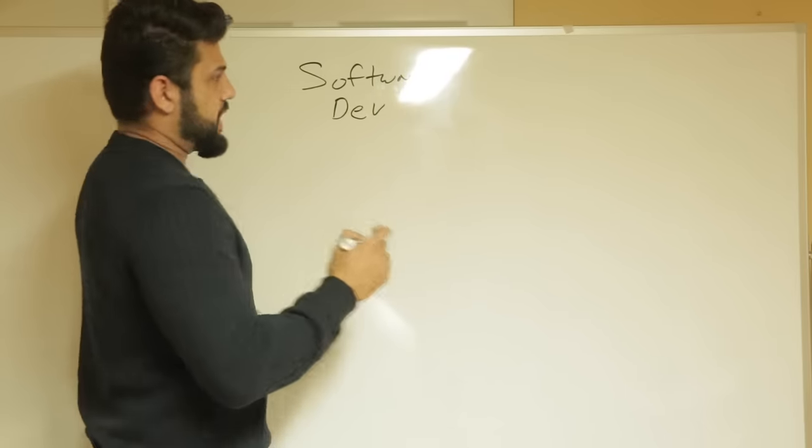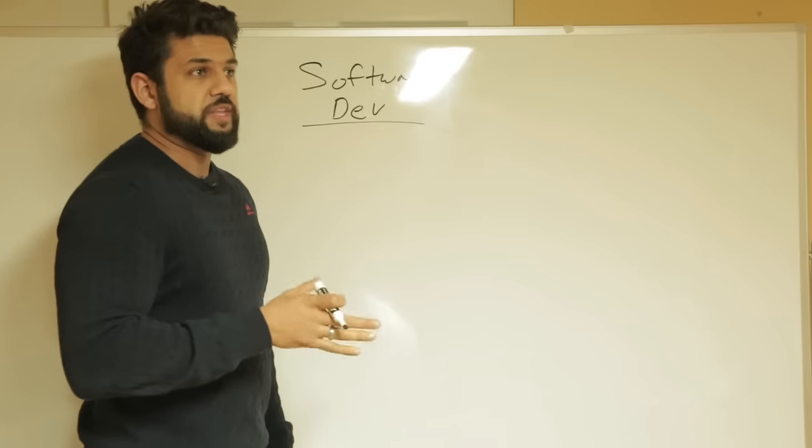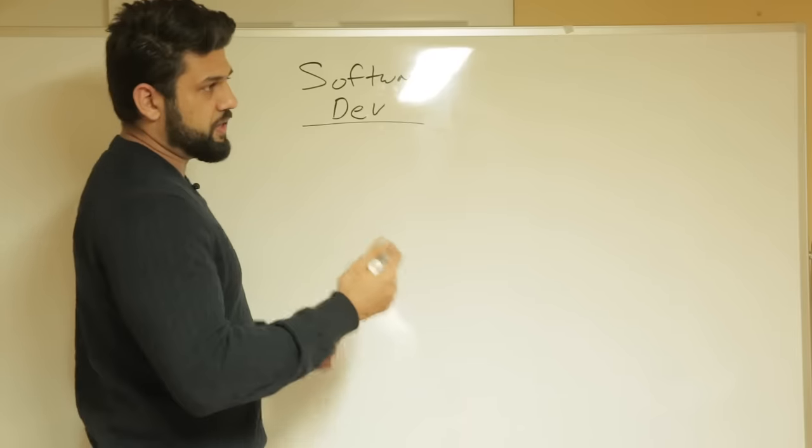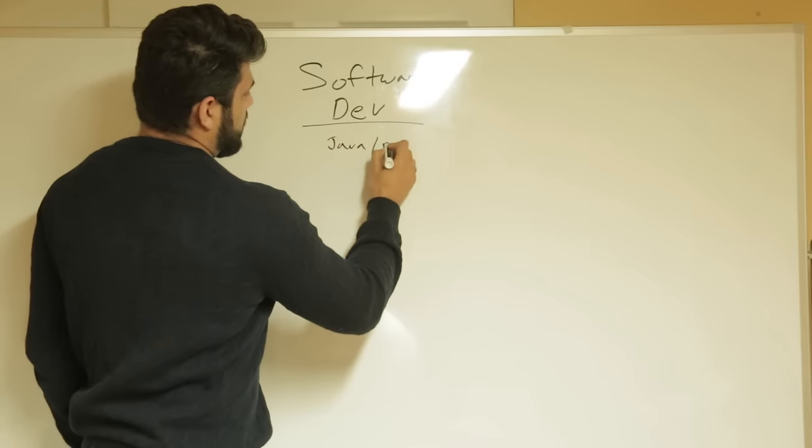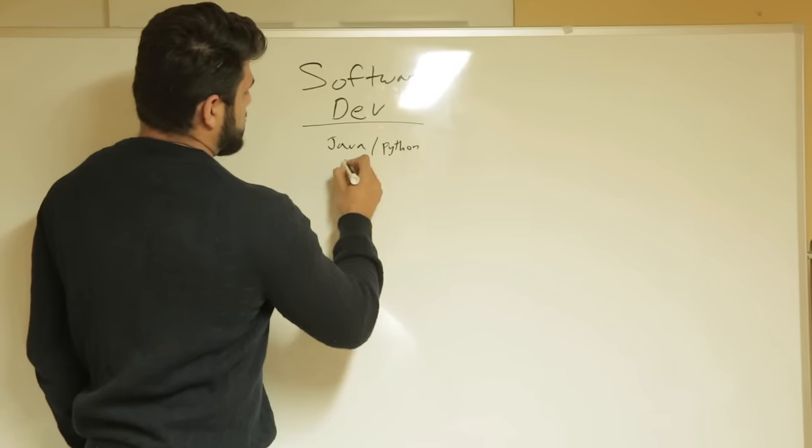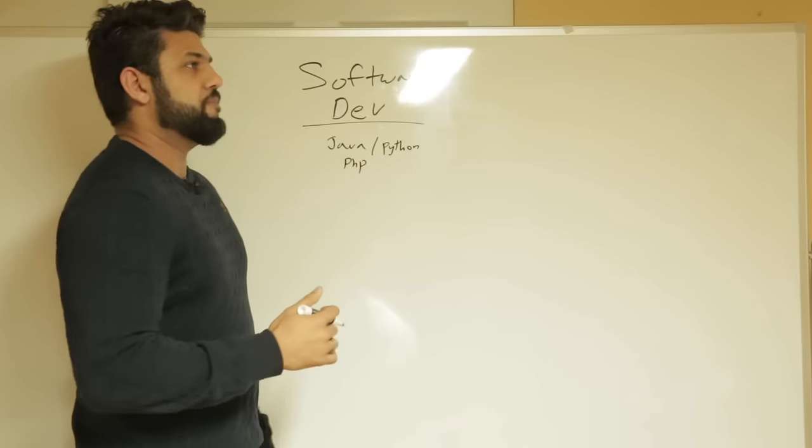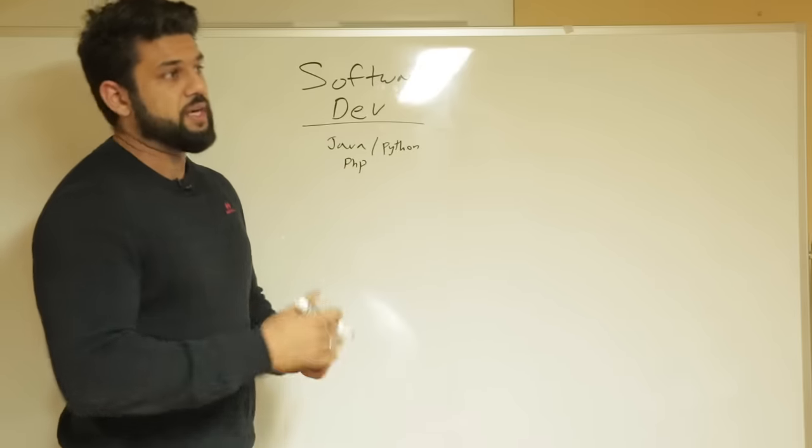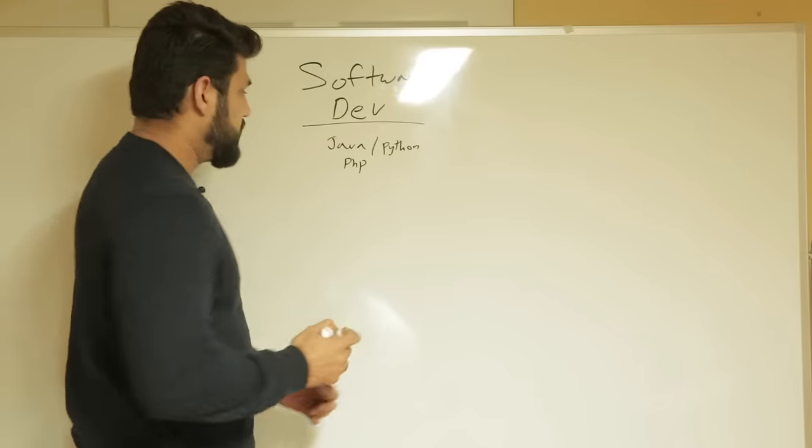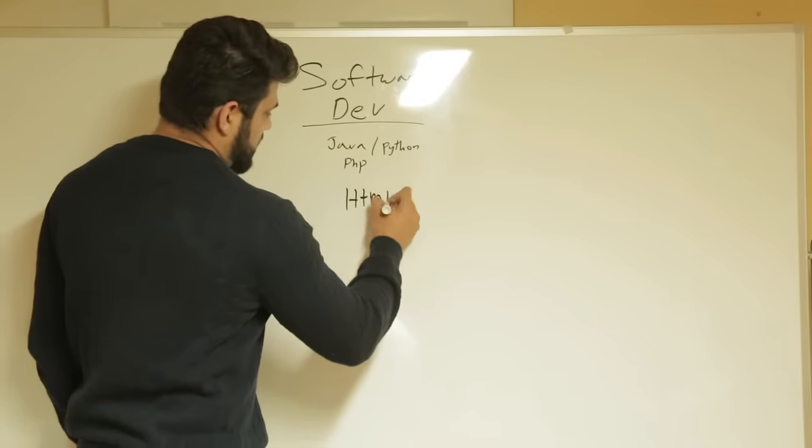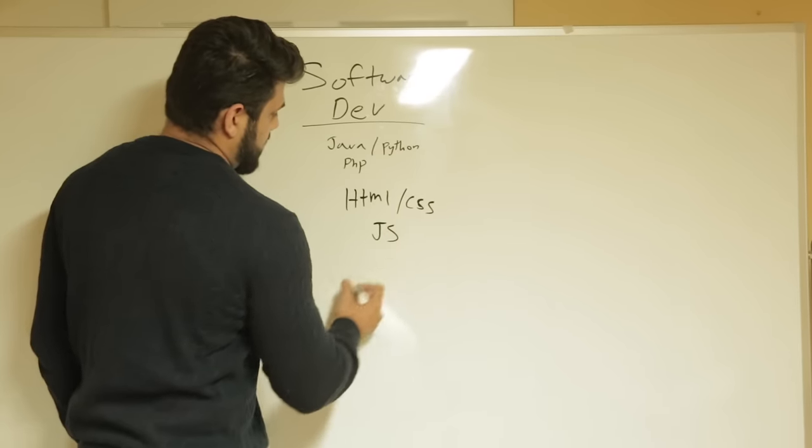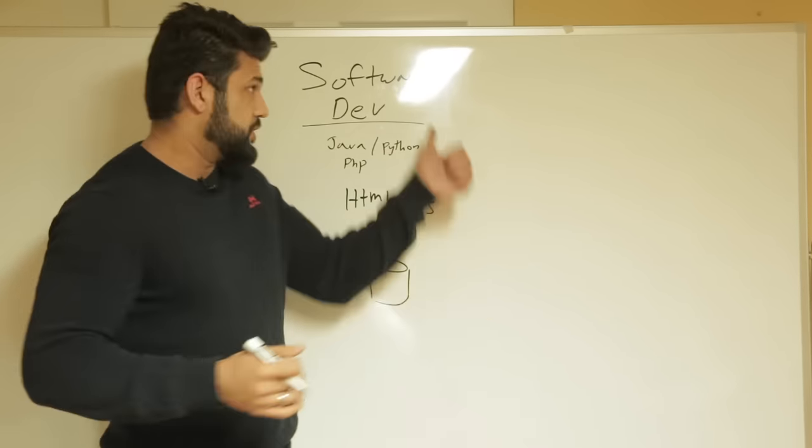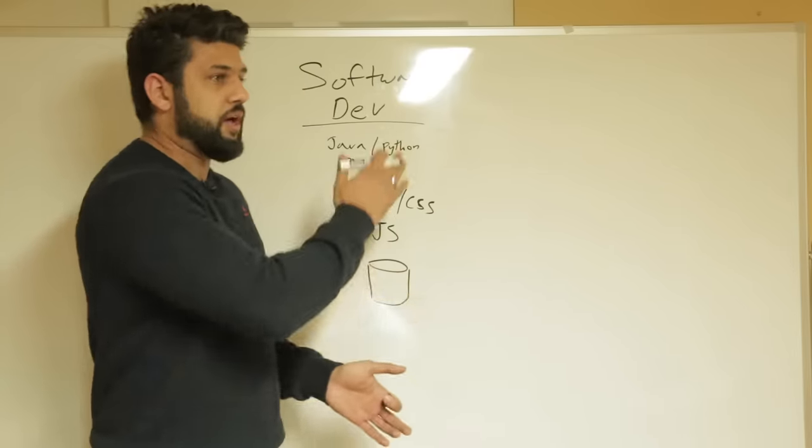But the software dev track, in my opinion, is a challenging track for someone that does not have a computer science degree because it requires you to know a couple of different programming languages, maybe one or two. The most popular ones are Java and Python. Another very popular one is PHP. And then a candidate would also need to have some understanding of the overall landscape of technology, understand front-end, understand back-end. So they would need to know a little bit of HTML, CSS, and some JavaScript, and maybe a little bit of databases. I'm just going to draw a database here.